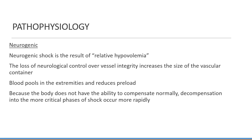Neurogenic shock causes a relative type of volume loss because of the loss of nervous control over blood vessels, usually resulting from a traumatic injury to the brain and spinal cord. The loss of nervous control causes the vessels to dilate, increasing the capacity of the system and creating a state where proportionally less volume is present without actual volume loss. Blood pools in the extremities, reducing the amount returning to the heart. The body may not have the capacity to compensate because the structures related to the sympathetic nervous system may be affected by the trauma, so decompensation can occur at an accelerated rate.